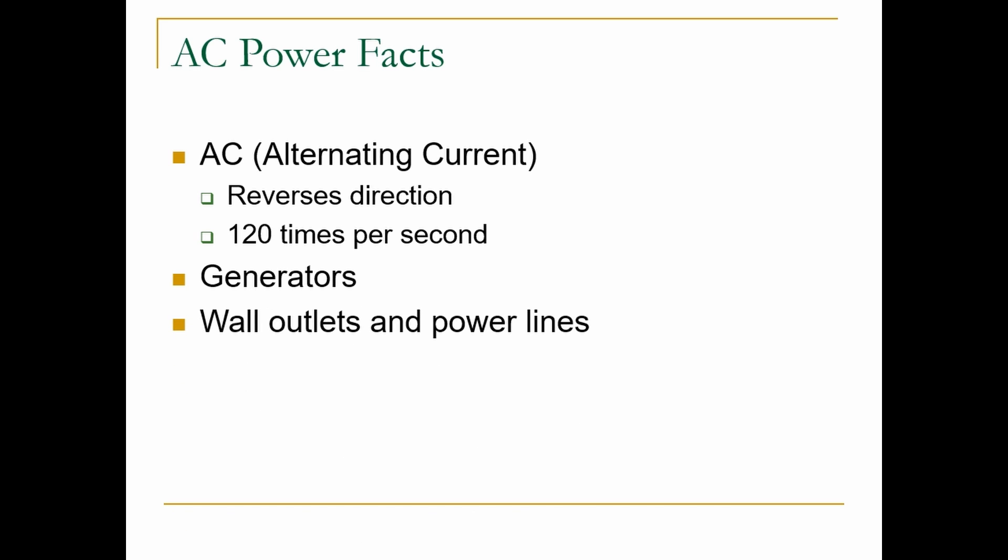AC power is the power found in wall outlets and is transmitted from building to building using power lines. X-rays rely on AC power to generate the high voltages necessary for X-ray production. The conversion of 120 volts to 70 kilovolts needs a transformer. Transformers require AC power to make the conversion process possible.